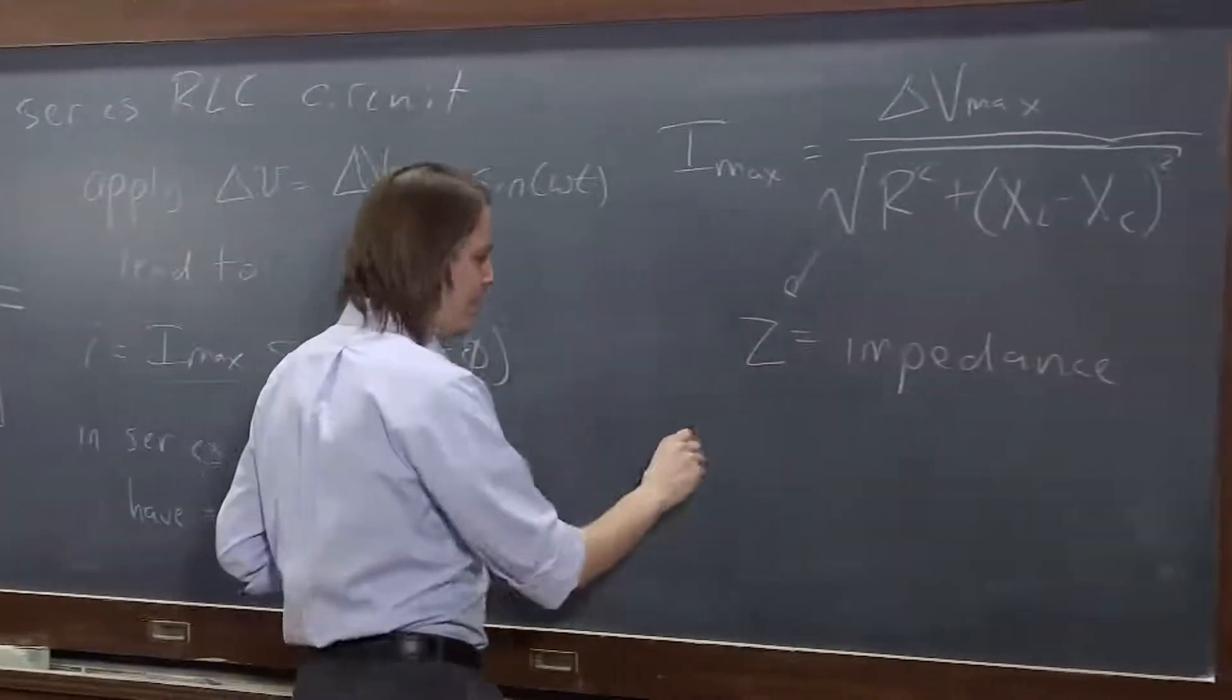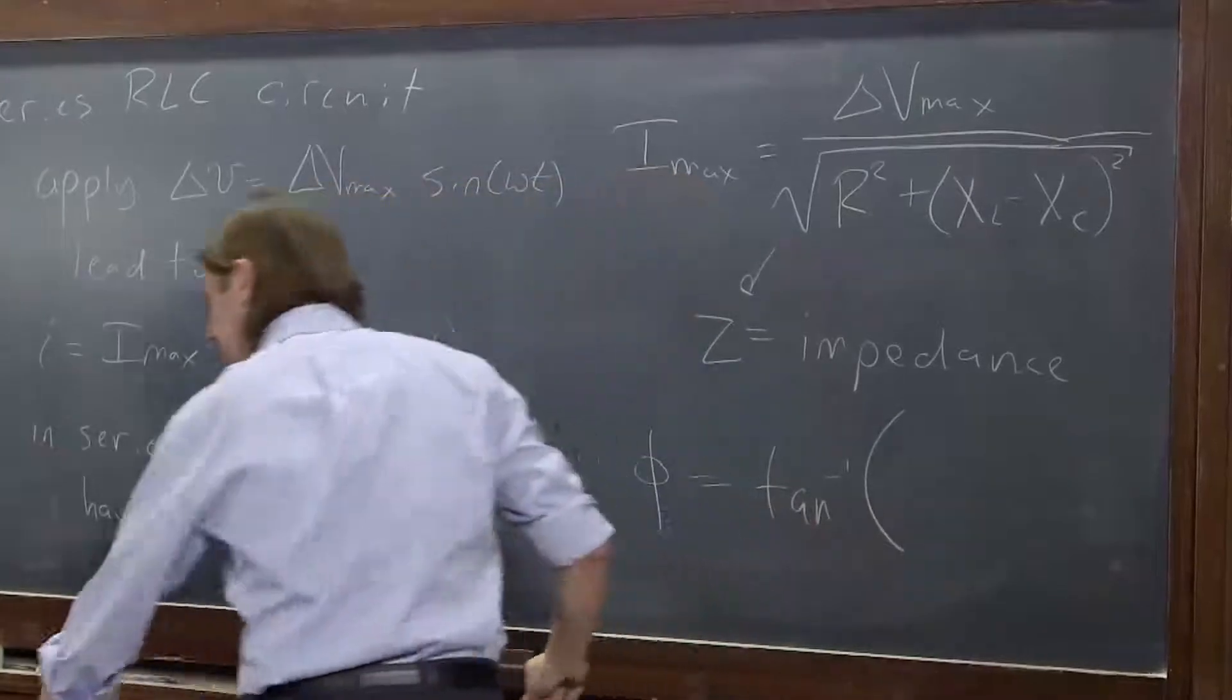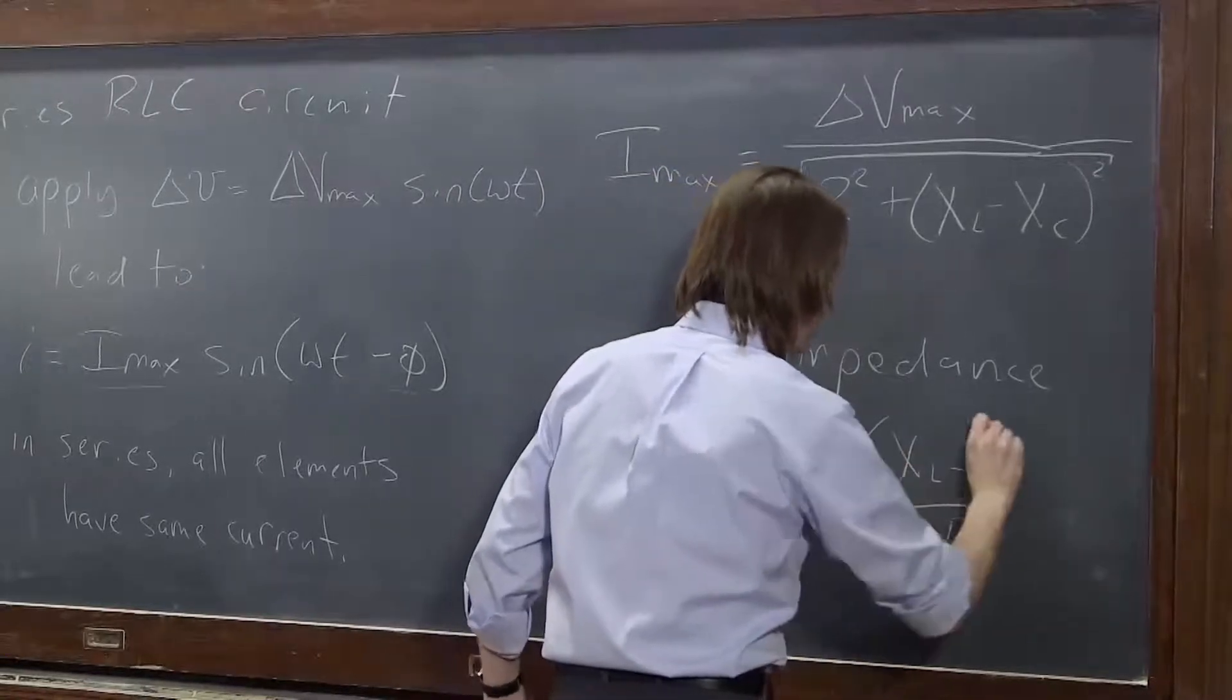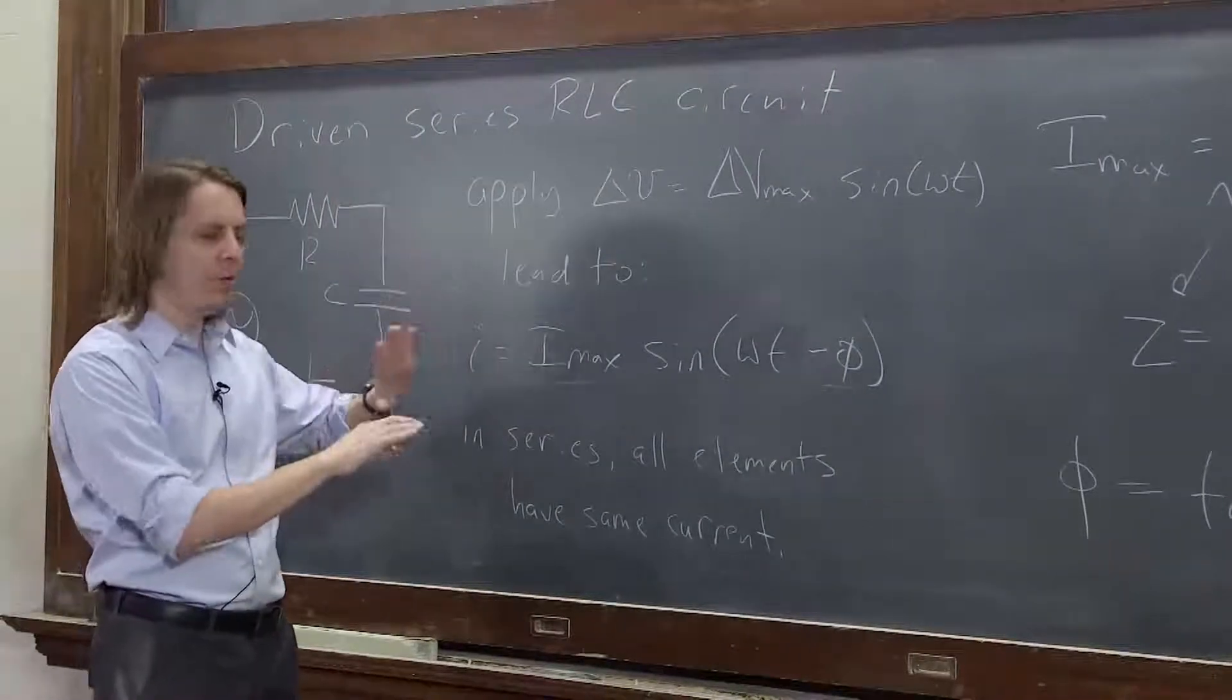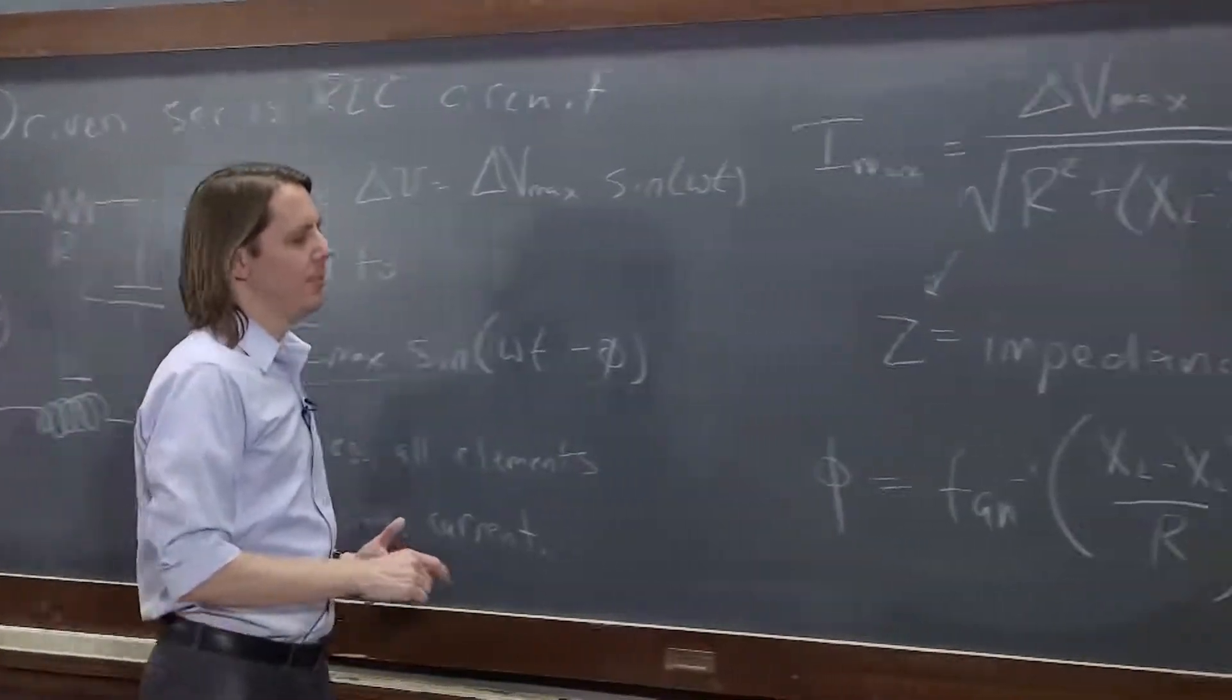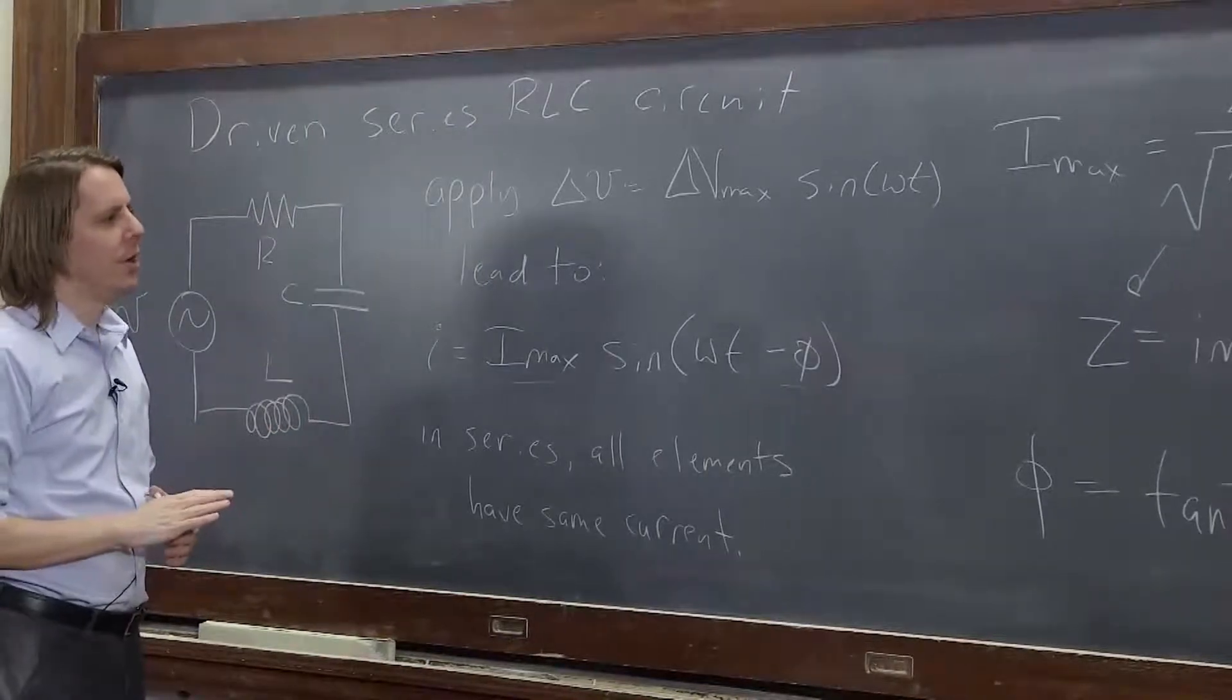The phase lag that you get also depends on those three things. It's the inverse tangent of, no, let me get it wrong. Yes, XL minus XC. Yes. This minus this over R. Again, if we went through the differential equation solution, solved it, plugged in the constants, etc., you end up getting something like this. And this shows you, since it's an inverse tangent, basically it's only got unique values from plus pi over 2 through 0 to minus pi over 2. So that's where your phase is always in there somewhere.